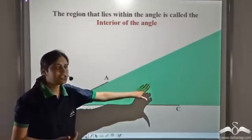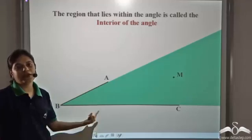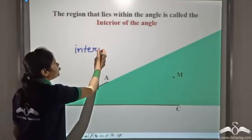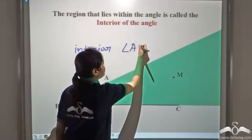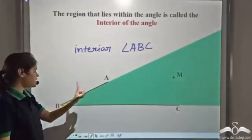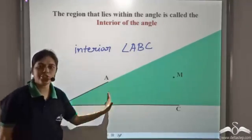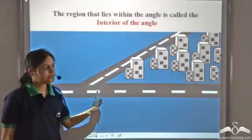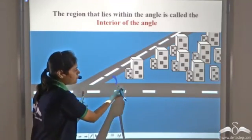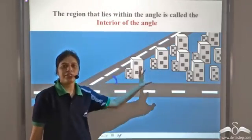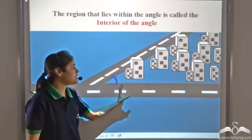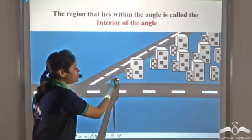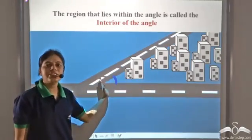Any point in this region is said to be in the interior of angle ABC. So we say point M is in the interior of angle ABC. Now consider these two roads — they form this angle. So these houses and buildings can be considered to be in the interior of these two roads, or we can say all these buildings are in the interior of this angle.